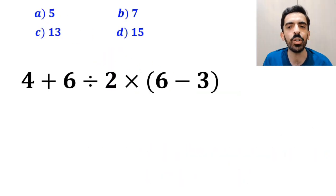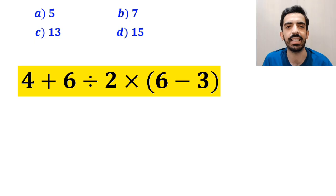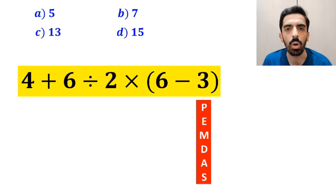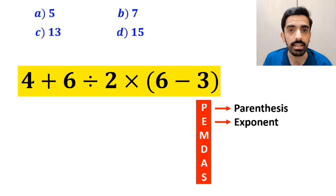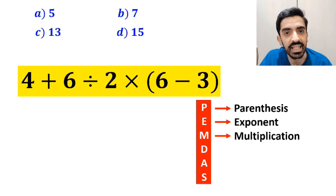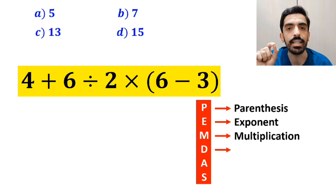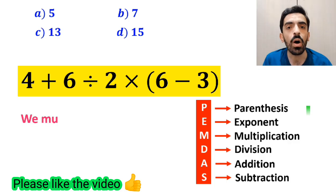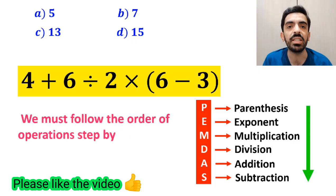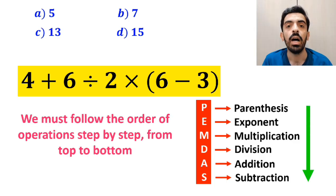Now let me show you how to solve this expression correctly. To solve this problem, we must follow the PEMDAS rule, where P stands for parenthesis, E stands for exponent, M stands for multiplication, D stands for division, A stands for addition, and S stands for subtraction. We must follow the order of operations step by step from top to bottom.